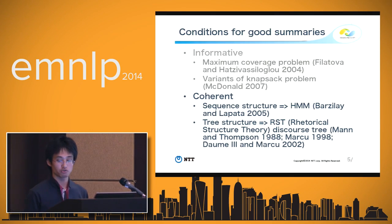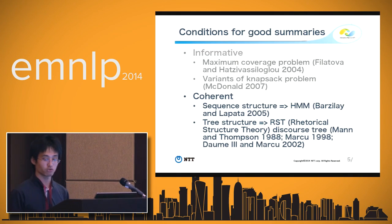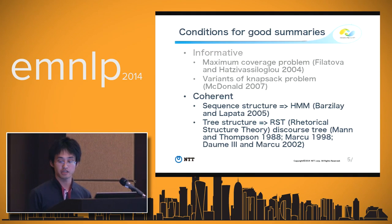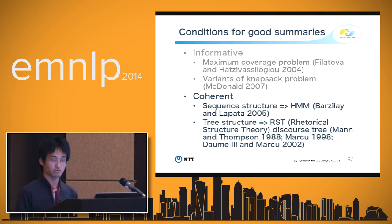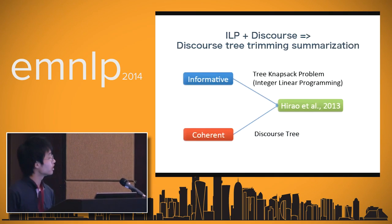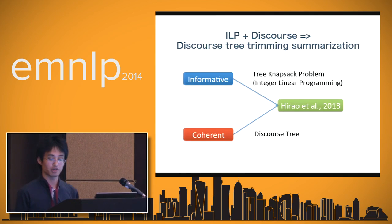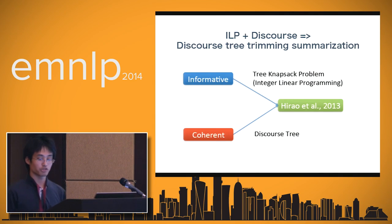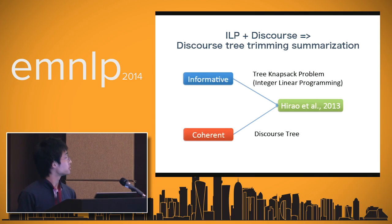Vajray used the hidden Markov model to capture local coherence. To capture more global discourse structure, Mann and Thompson proposed Rhetorical Structure Theory, RST, which is based on tree structure. Mark proposed a method that used the RST discourse tree. In 2003, Hirao et al. proposed a method considering both informativeness and coherence. To satisfy informativeness, they formulated summarization as the tree-knapsack problem, a kind of linear integer programming. To satisfy coherence, they used the discourse tree.